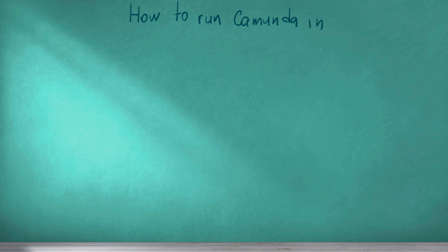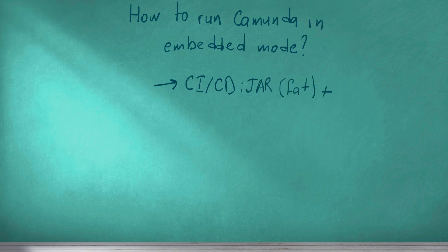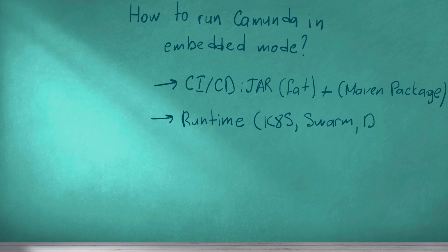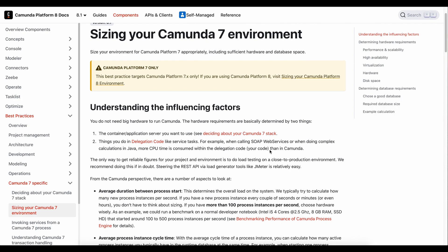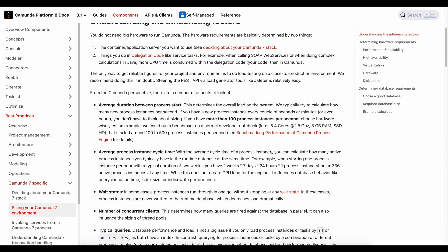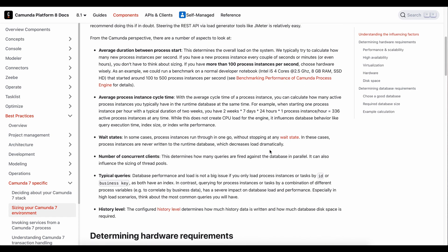What do you need to operate a Camunda microservice in production? You need a CI/CD pipeline to create an executable JAR — for example using Maven package — and a Docker image. A runtime: Kubernetes would be a nice option, but you can use any container platform you want. A database that fits your capacity requirements; Postgres would be a good start. If you want to know more about capacity planning in Camunda Embedded, just let me know in the comments.